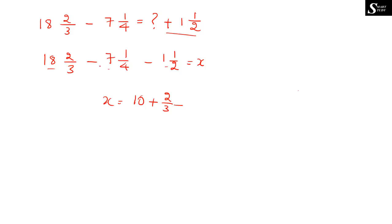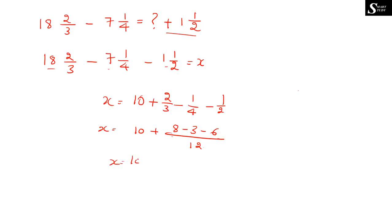To compute 2/3 − 1/4 − 1/2, the LCM of 3, 4, 2 is 12. So: (12/3)×2 − (12/4)×1 − (12/2)×1 = 8 − 3 − 6 = −1. Therefore the fraction part is −1/12. So x = 10 − 1/12 = 120/12 − 1/12 = 119/12.